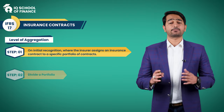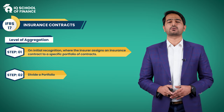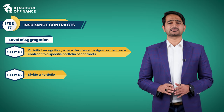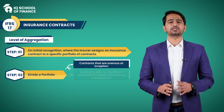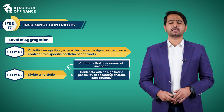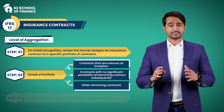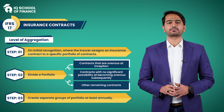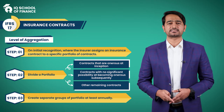Step 2 involves dividing the portfolio into at least three groups as mandated by IFRS 17: Group 1 consists of contracts that are onerous or loss-making at inception; Group 2 includes contracts with no significant possibility of becoming onerous subsequent to initial recognition; and Group 3 encompasses all remaining contracts. In step 3, separate groups must be formed within the same portfolio at least annually, ensuring contracts within the same group are no more than one year apart in terms of inception date.